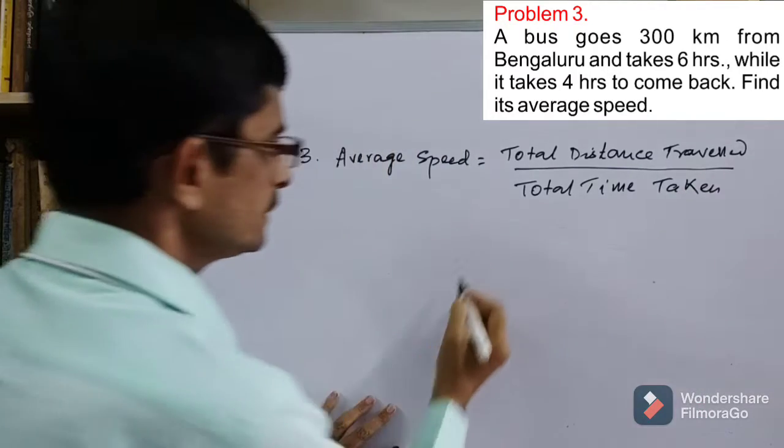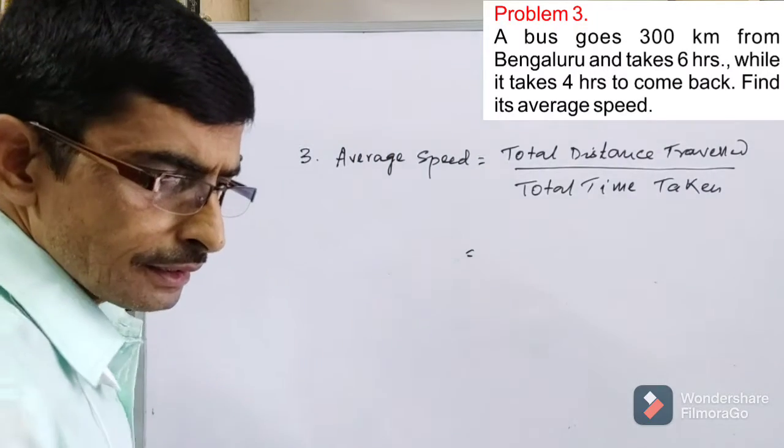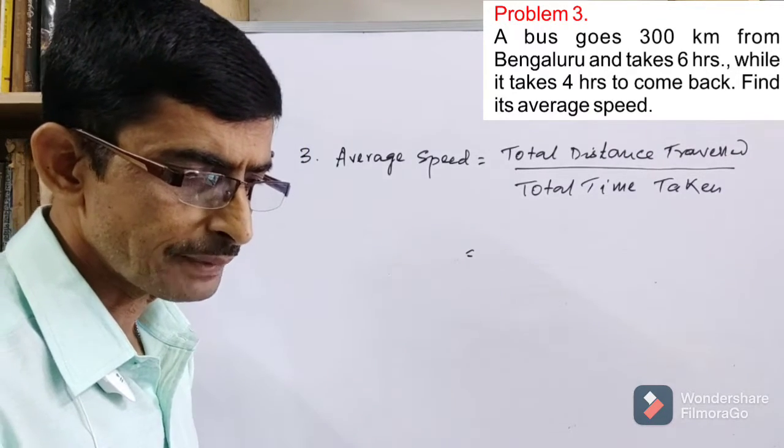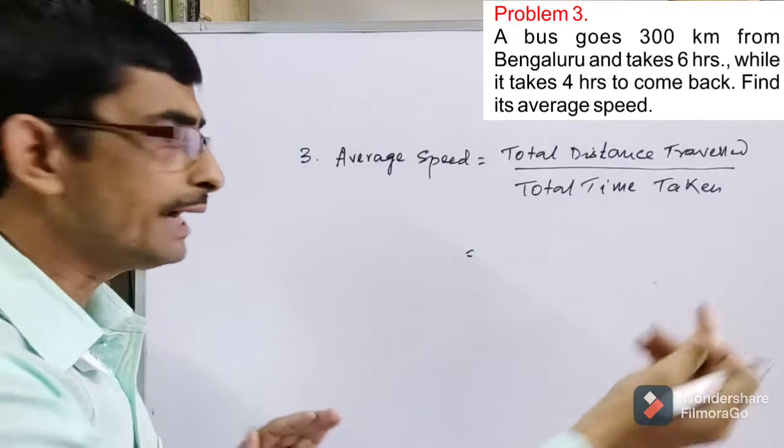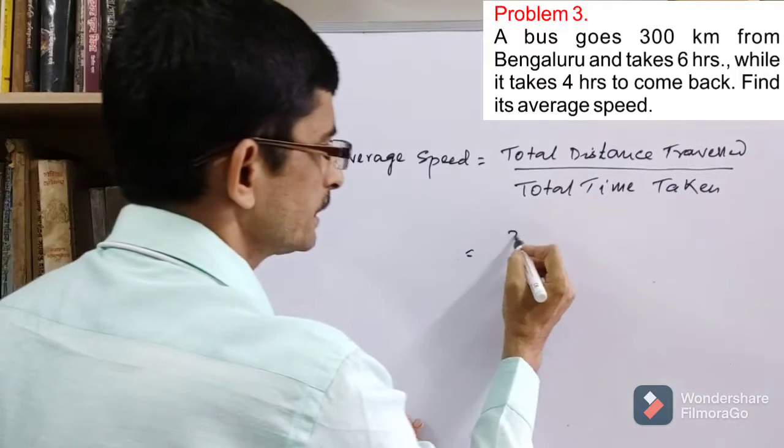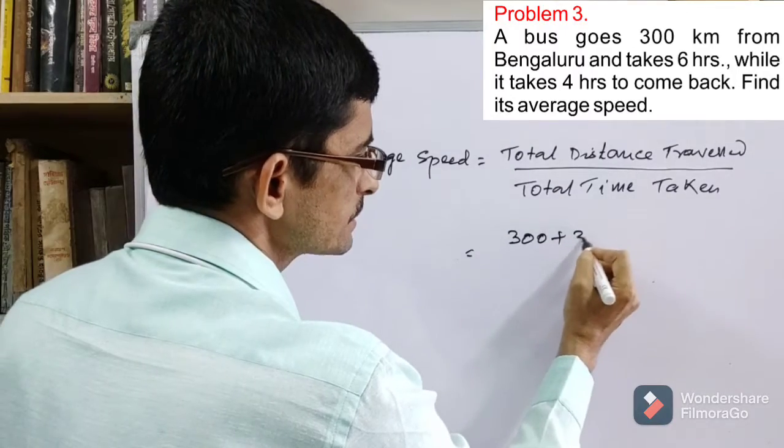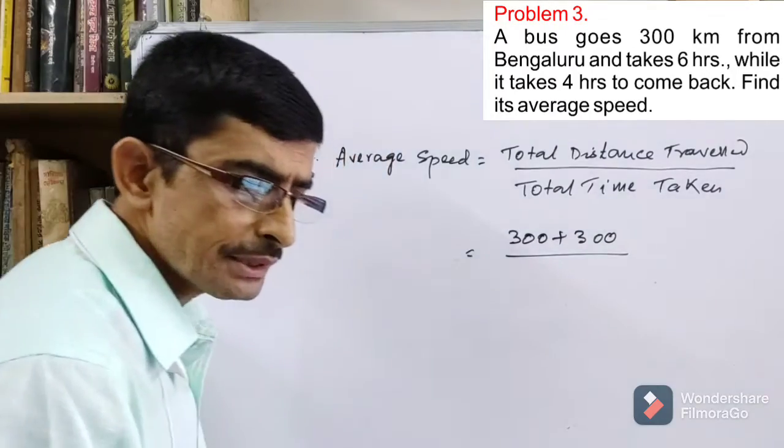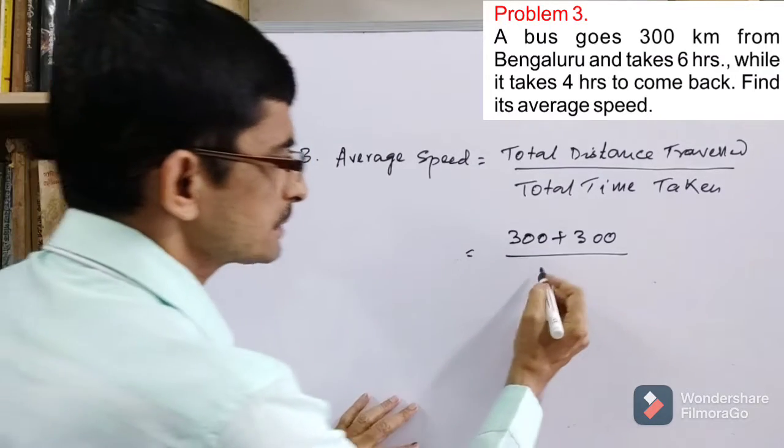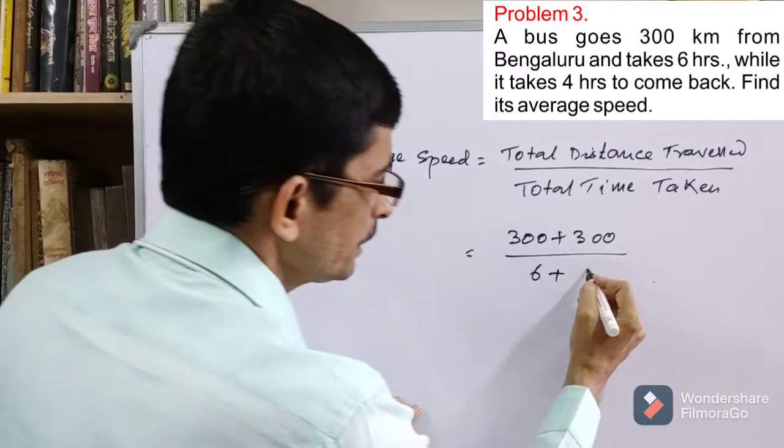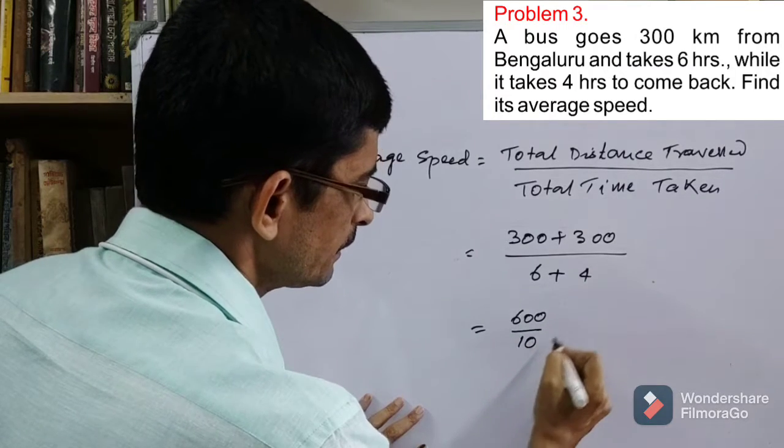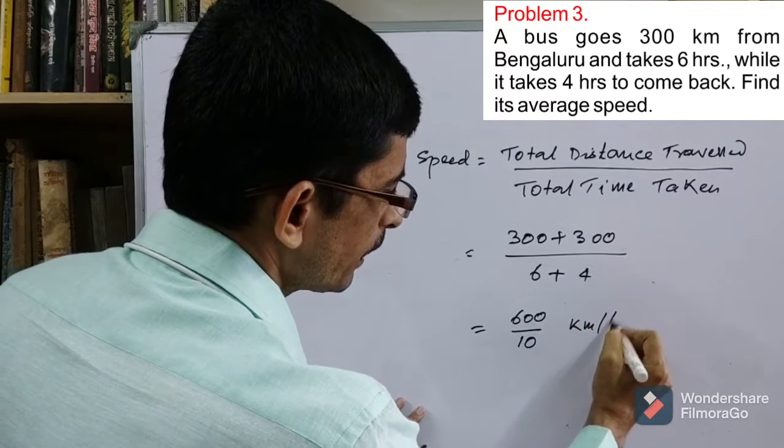In this problem, the bus moves from Bengaluru to some place. The distance is 300 kilometers and it comes back 300 kilometers. That is, total distance is 300 plus 300. Time taken is, for going to that place, it took 6 hours and for coming back it took 4 hours. That is 600 divided by 10 kilometer per hour, and it is 60 kilometer per hour.